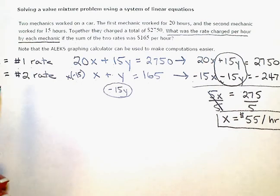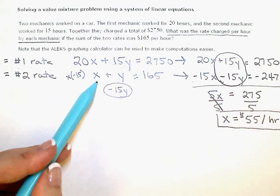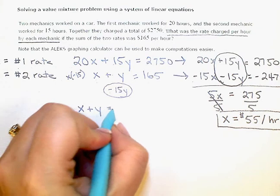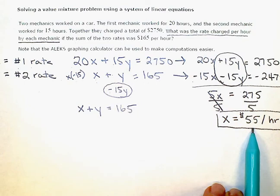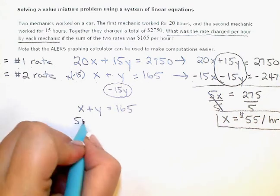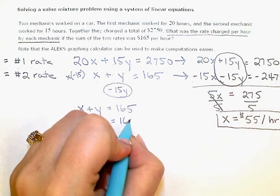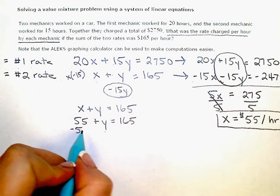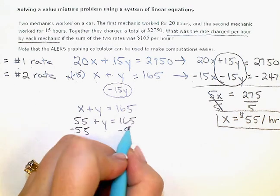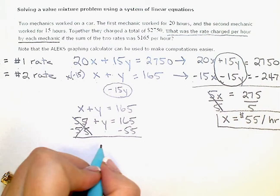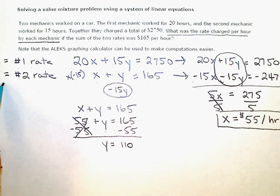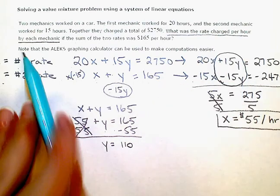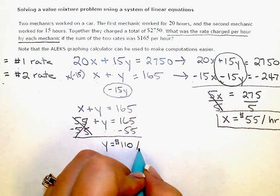Now I need to figure out mechanic number two's hourly rate. I'm going to go back to one of these two original equations. This is the simpler one, so I'm going to use that one: x plus y equals 165. I'm going to replace this x with 55 since I already figured out what the x value is. So 55 plus y equals 165. Then I need to solve for y, so I subtract 55 from both sides to keep my equation balanced. So y equals 165 minus 55, which is 110. This is the hourly rate charged per hour for mechanic number two. So mechanic number two charged $110 per hour.